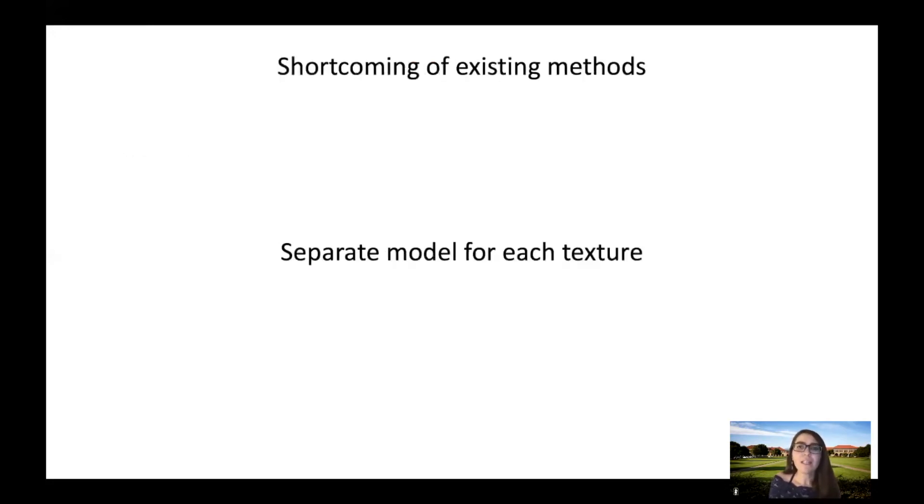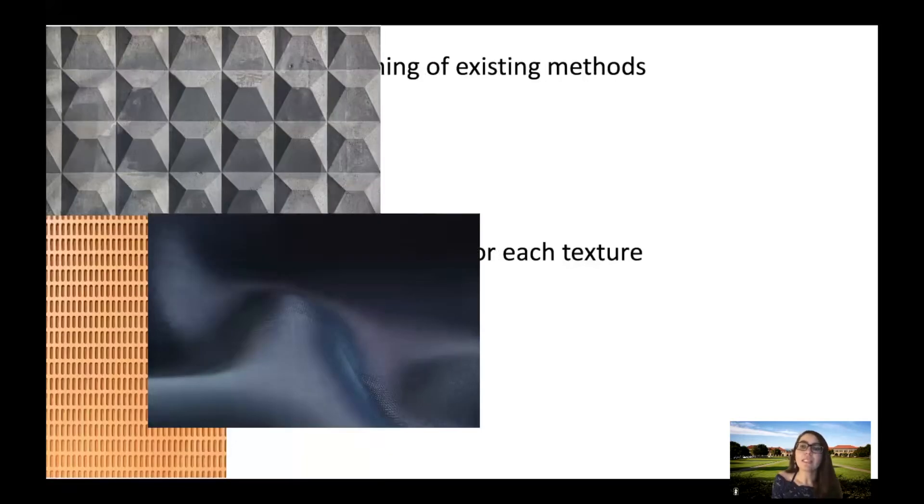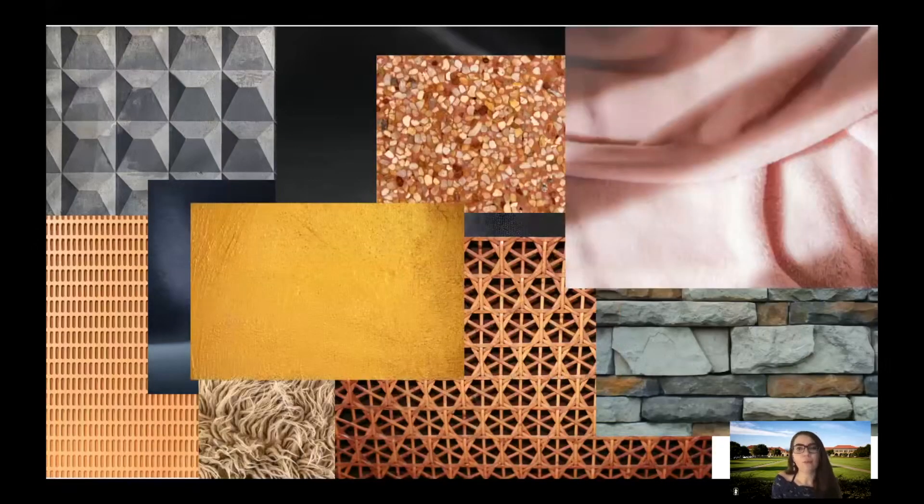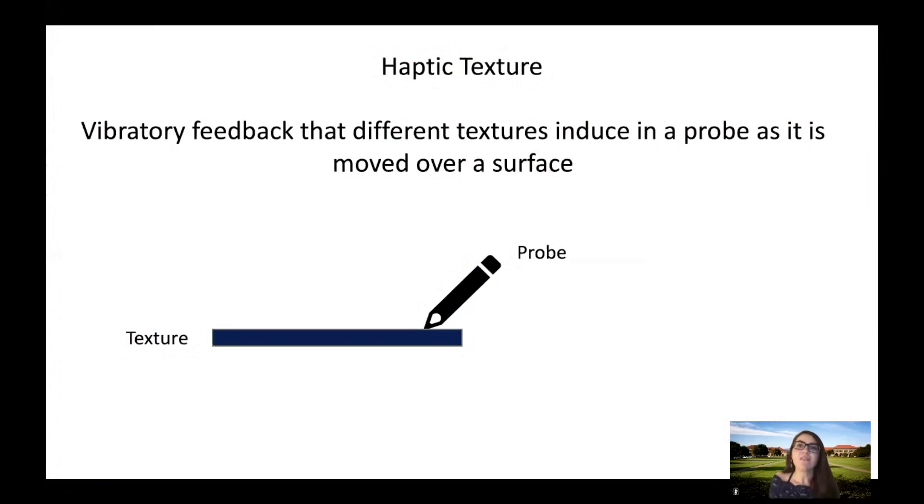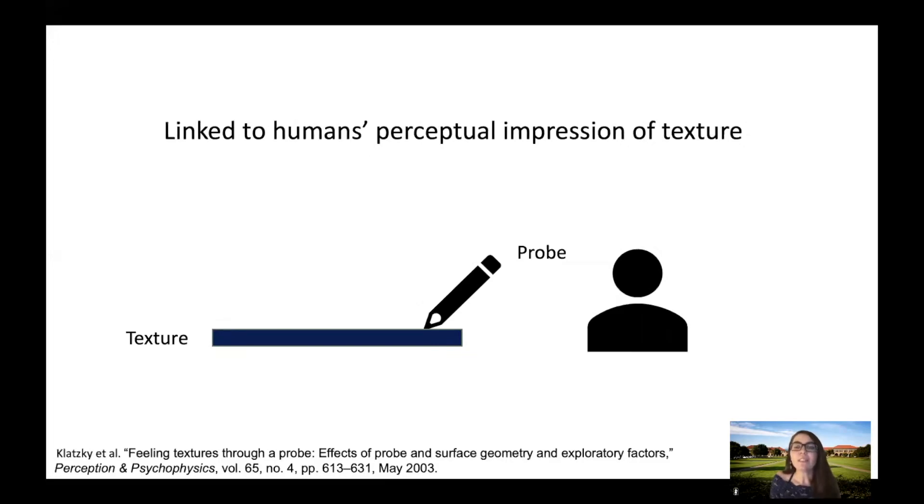However, these approaches develop a separate model for each texture. This makes it hard for them to scale to the unlimited variety of textures in the world. In this paper, we focus on data-driven modeling of the vibratory feedback that different textures induce in a probe as it is moved over a surface. This feedback is linked to human's perceptual impression of texture and is a function of the probe's action as well as the texture.